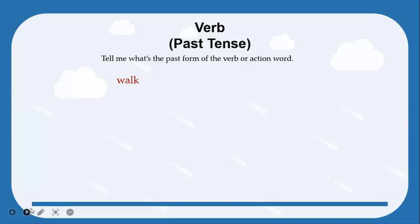Please read the instruction. Tell me what's the past form of the verb or action word — you have to tell me and then spell it. For example, what is the past form of 'walk'? How will you write it? Past is finished already — it happened already. Understand? W-A-L-K-E-D.